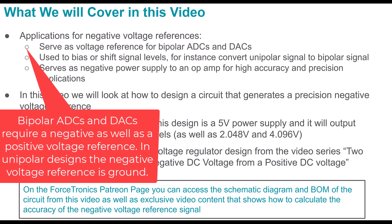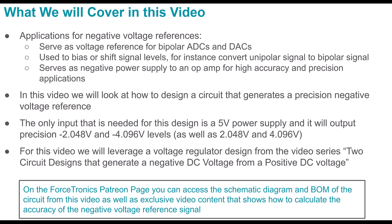You can also use a precision negative voltage reference to shift signals. For instance, if you have a unipolar signal and you want to make it bipolar, you could shift it between op amp stages using a negative voltage reference. You could even use it as the power supply for an op amp in high accuracy and high precision applications, which cuts down on power supply noise. We'll look at a circuit using a voltage reference IC that does 2.048 volts and 4.096 volts and turn both into negative voltages with very close specs to the original.